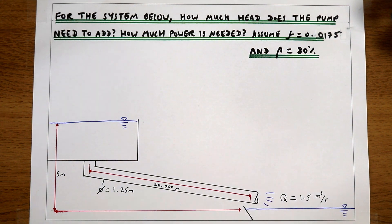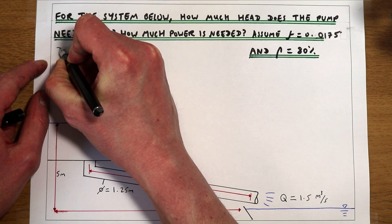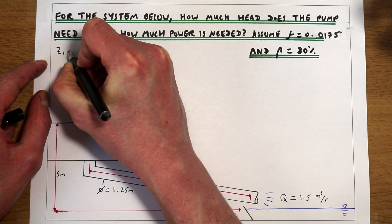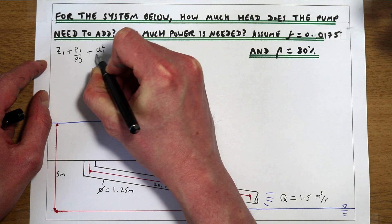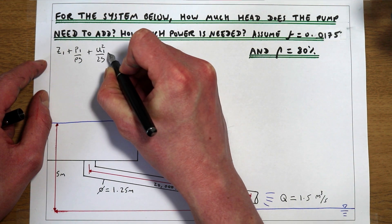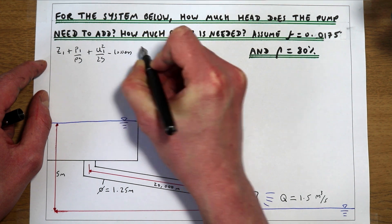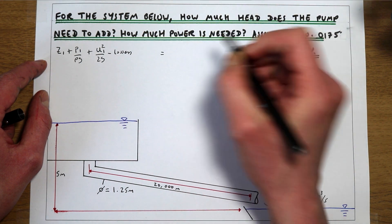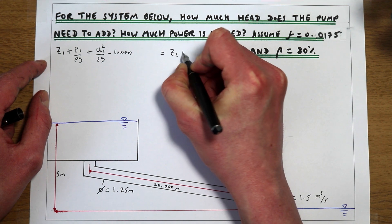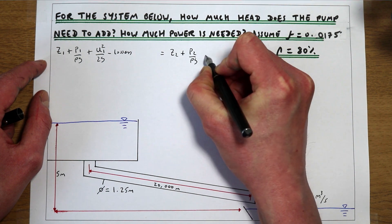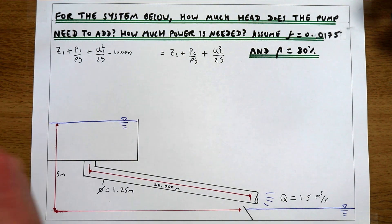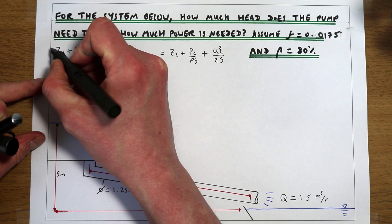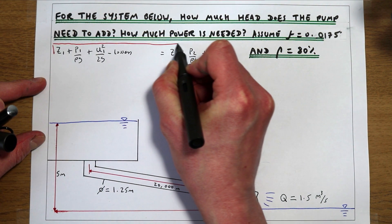To be able to do this calculation, firstly we need Bernoulli's equation: elevation at 1 plus pressure head at 1 plus velocity head at 1 minus losses equals elevation at 2 plus pressure at 2 plus velocity head at 2. That's Bernoulli's equation — it's going to govern our energies in this system.